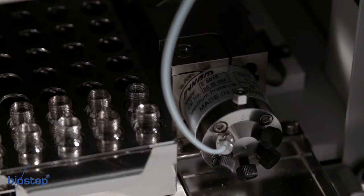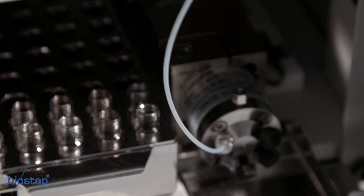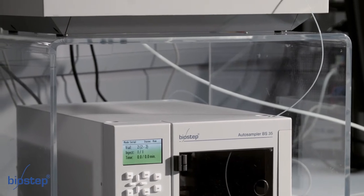A capillary tube connects the valve of the auto-sampler BS35 with a dosing syringe of the AS30.